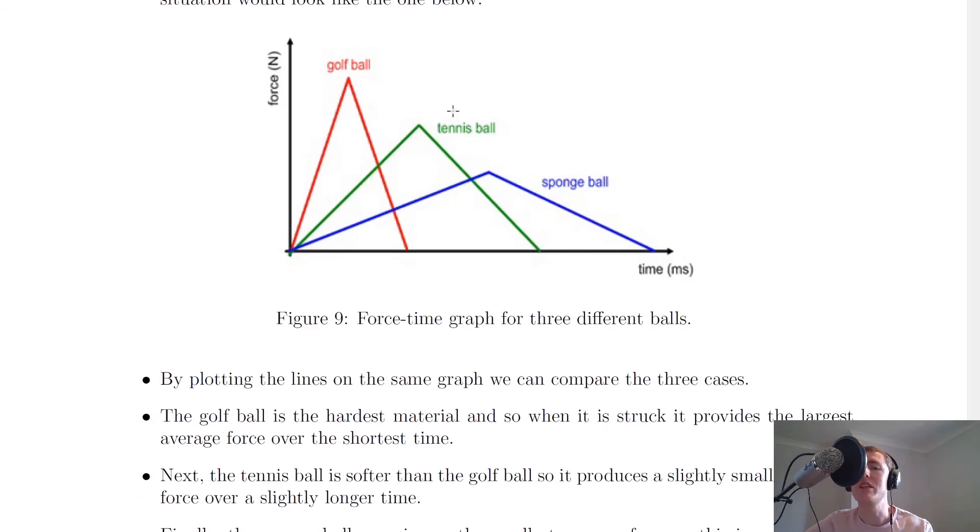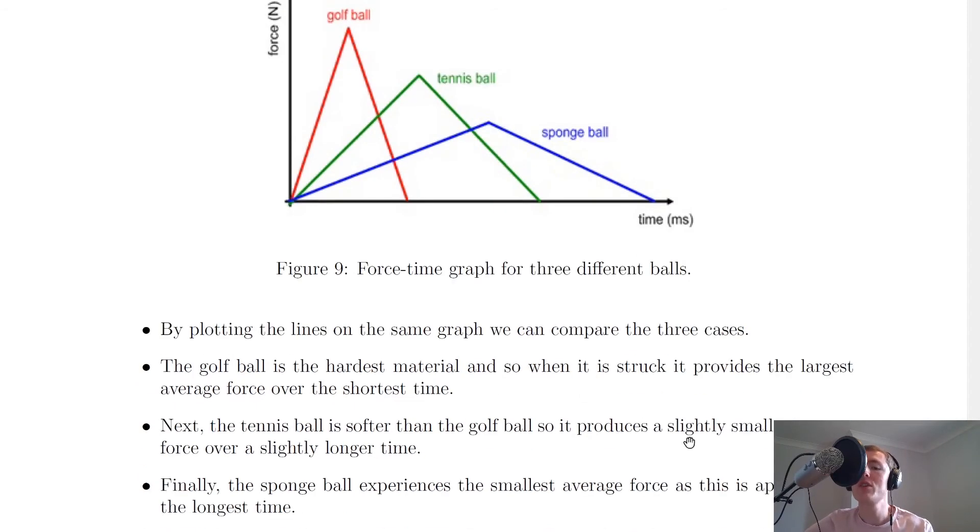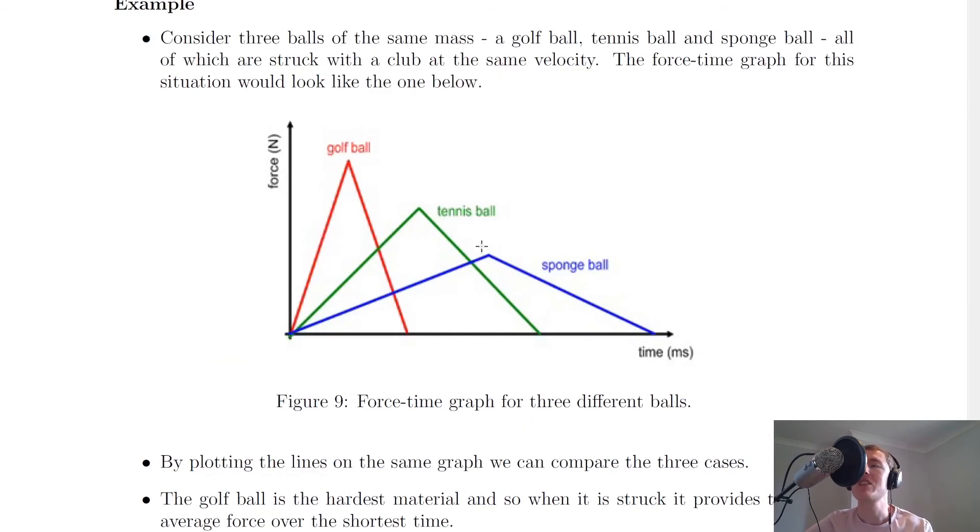The next hardest material is the tennis ball because it's softer than the golf ball, and so this is going to produce a slightly smaller average force over a slightly longer time because the tennis ball will be able to compress more than the golf ball on contact with the club. So that interaction is going to happen over a longer time with a smaller average force, so we've shown that here.